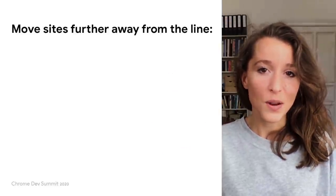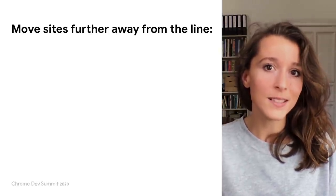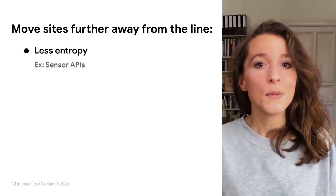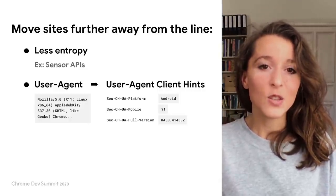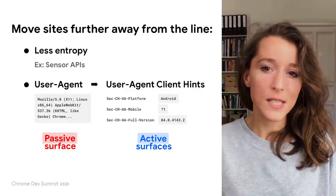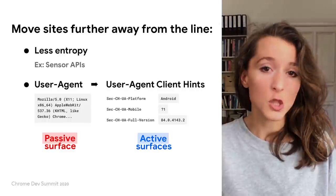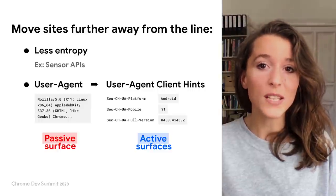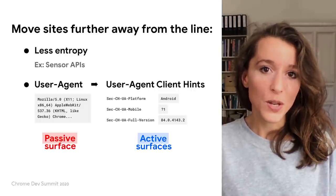Now, parallel to the privacy budget, Chrome is working on other measures to help move sites further away from the identifiability line. By reducing entropy where possible, like for some sensor APIs; by refactoring existing APIs to make them more focused, more purpose-built, and less identifying, like user-agent client hints instead of user-agent string; and by transforming passive fingerprinting surfaces — information all sites can access without running any client-side code, like HTTP headers — into active surfaces, information sites can access only by requesting it or running code on the client-side, like Canvas. This makes it easier for the browser to measure and control the budget.